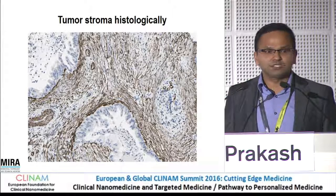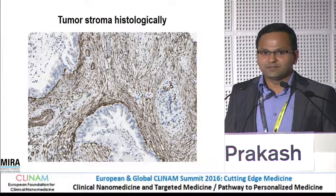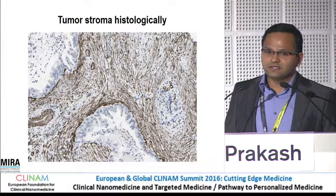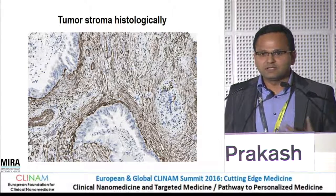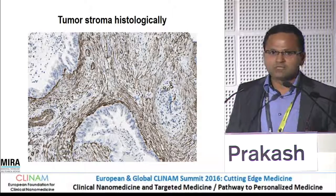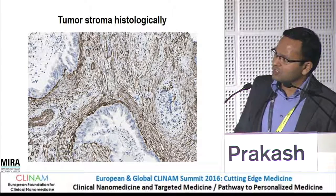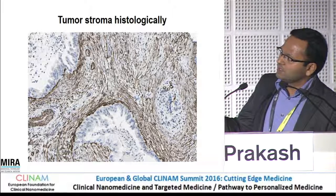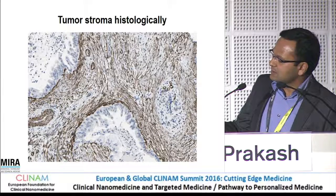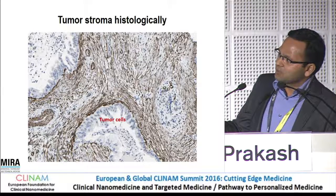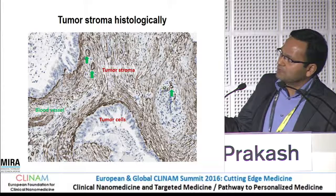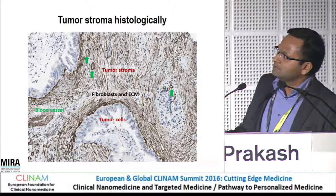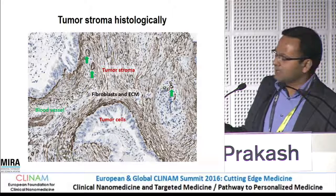Looking at tumor stroma histologically — I'm affiliated with the Karolinska Institute Oncology Pathology Department — what I learned is to simply go to the patient material, take the sample, look histologically, and understand what is in the patient material. That's where the journey starts. If you look at this tumor stroma, all the brown staining is showing the tumor stroma. These are the tumor cells — you can see the proliferating cells with multiple nuclei. This is the tumor stroma; you have vessels mainly located at the stromal part, and some blood vessels are also close to the tumor cells. This is enriched with fibroblasts and extracellular matrix.